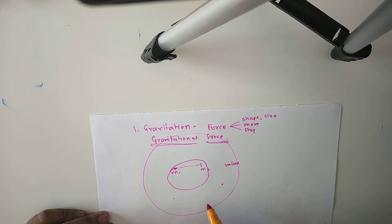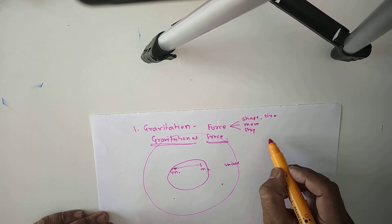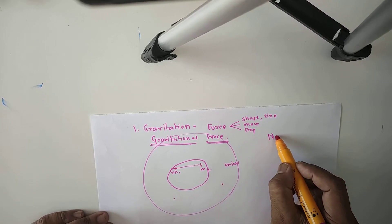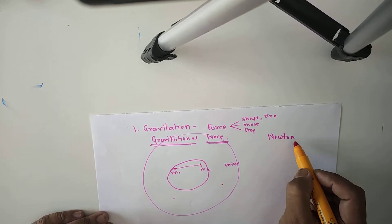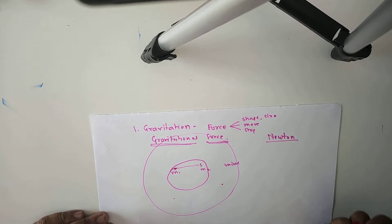This phenomena of gravitation is discovered by Newton, Isaac Newton. Since childhood, we know that the story of apple which falls on earth from tree of apple. What is that story?